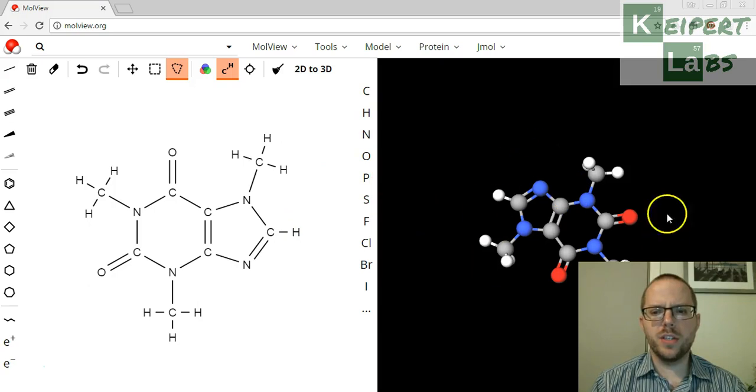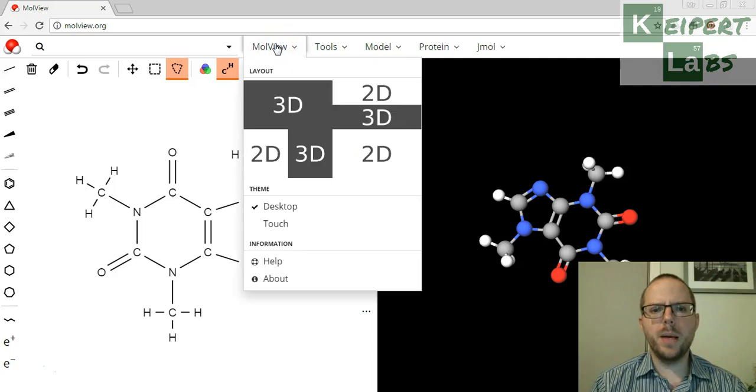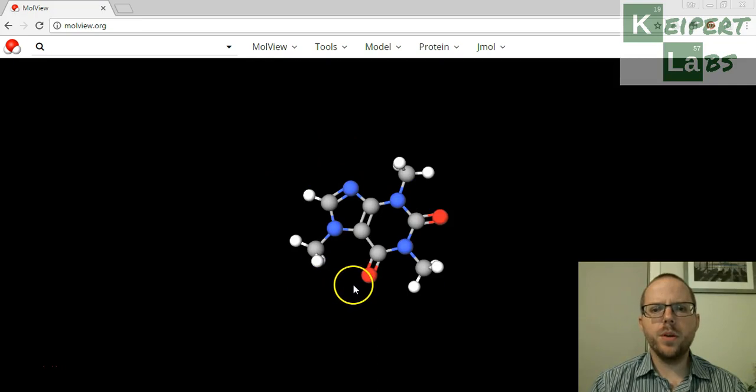But at this stage all we want to be using MolView for is looking at 3D models. So the way that you get to that, which is this stuff over here, is we go up to the MolView menu bar up the top here and you click on 3D and this is what comes up.